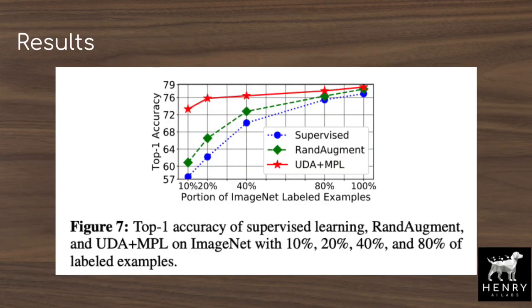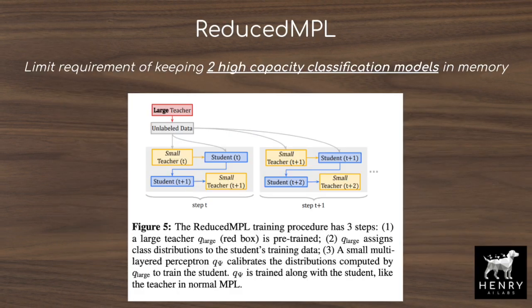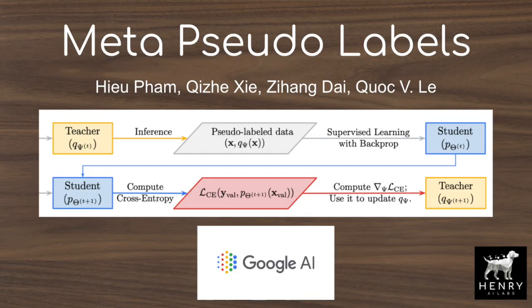The authors also introduce a reduced MPL framework to avoid the memory bottleneck of having two high-capacity models in memory for the meta-learning framework. This video will explain MetaPseudoLabels from researchers at Google AI.